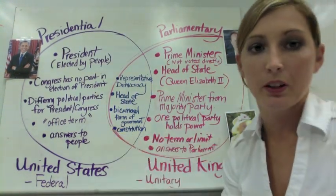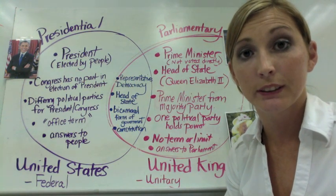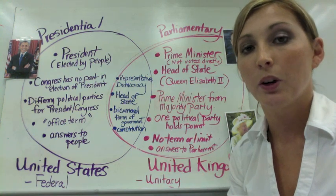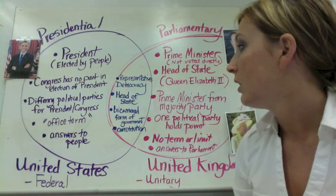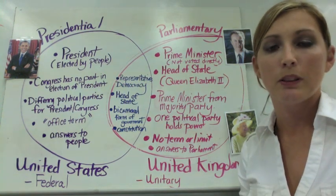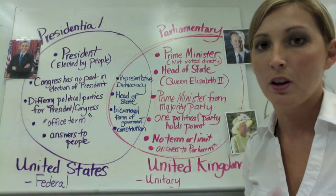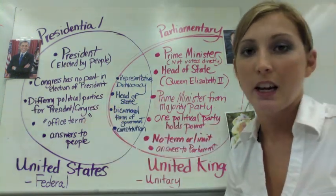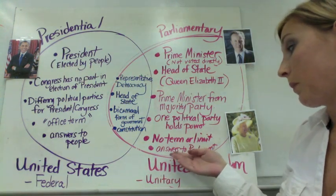Regarding office terms: a presidential term is four years in the United States, and after four years we either re-elect the current president or get a new one, with a total term limit of eight years — a person can't serve longer than eight years as president. In a parliamentary democracy there is no term limit; as long as the prime minister has the confidence and backing of parliament, they can continue to be prime minister for as long as they have that support. In a presidential democracy, the president answers to the people, whereas in a parliamentary democracy, the prime minister answers to parliament.